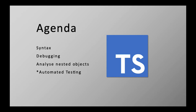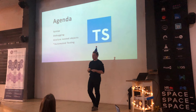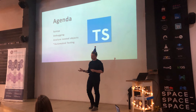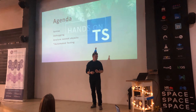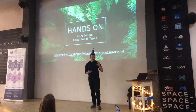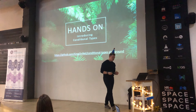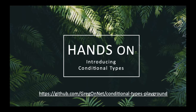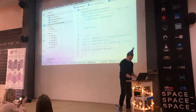We will start with the syntax of conditional types and how we can build them. Then we'll see how to debug those conditional types manually to check if our types are still correct. Then we'll see how we can analyze nested objects and produce very dynamic but strictly typed APIs. If there is time, we'll also look at automated testing to make sure our API works as expected. The source code is available on GitHub.